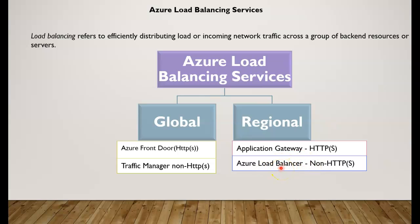The Azure Load Balancer sits in front and can route traffic either to this region, or to this availability zone based on the incoming request. It can also work as a round-robin, meaning the first user goes to server one, the second user goes to server two, the third user goes to server three. Every incoming request is properly shared so that your services are used efficiently and no single resource gets overloaded.